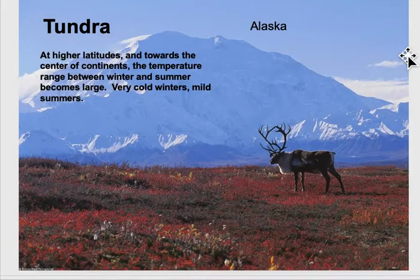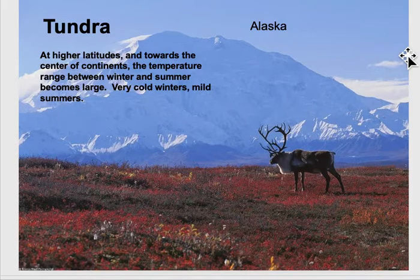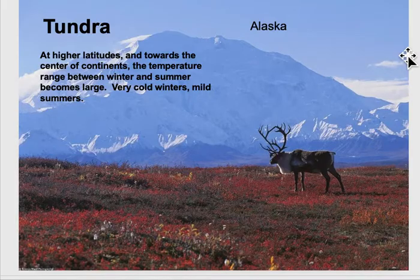Tundra, even further north, is found at very high latitudes and in the middle of continents. The temperature range between winter and summer can be large — summers aren't going to be terribly warm, but the winters are going to be very, very cold. Alaska is a good example of a tundra climate.